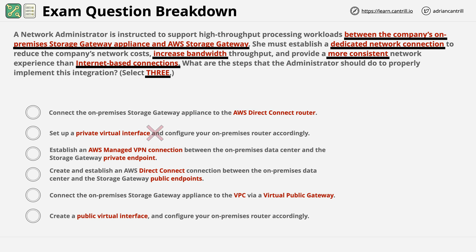With answer B, regardless of whether you're selecting VPN or Direct Connect, Storage Gateway doesn't use private networking or private endpoints. And the same is true with answer C — regardless of picking Direct Connect or VPN, private endpoints aren't used for Storage Gateway. So out of the six answers, we've already eliminated two of them.